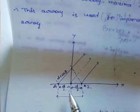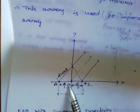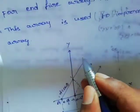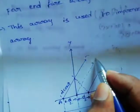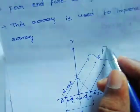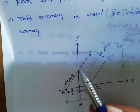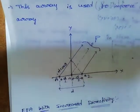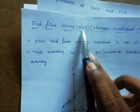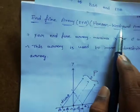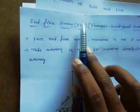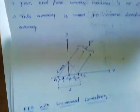I have taken a sample diagram with two point sources separated by a distance d. There is a distant point P, and the phase difference is d·cosφ, with total distance d. The major application of this end fire array — also called Hanson-Woodyard array — is to increase directivity.